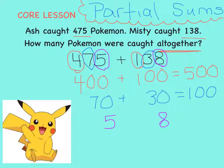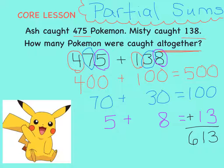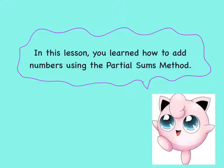On the right-hand side, you now see the partial sums. Let's add these together. Five hundred plus 100 plus 13 equals 613. Partial sums is a useful strategy when solving addition problems in your head. In this lesson, you learned how to add numbers using the partial sums method.